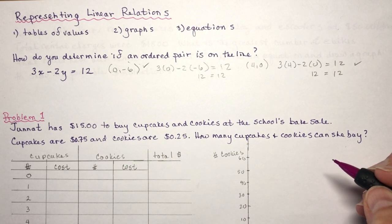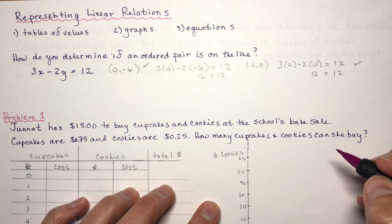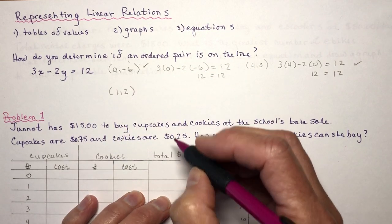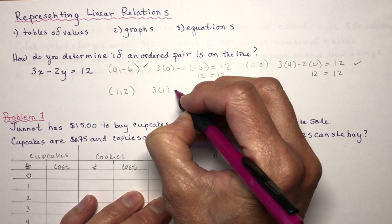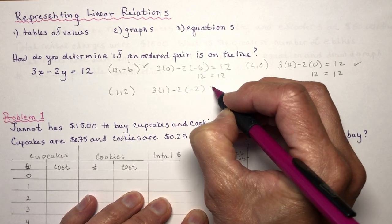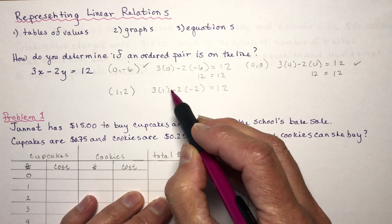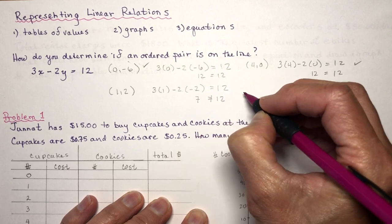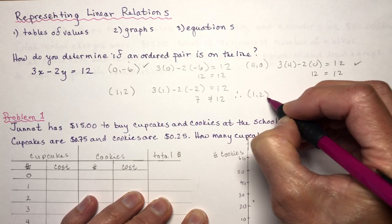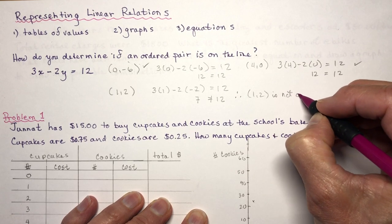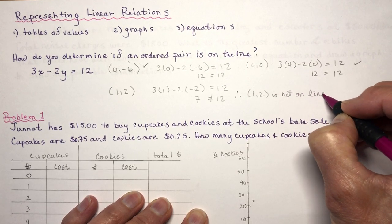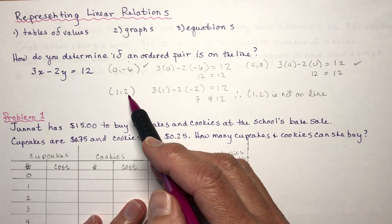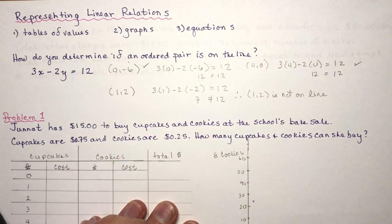So I'm sure you can think of many points that are not on the line. Let's try the point (1, 2). Is (1, 2) on the line? I would say 3 times 1 minus 2 times -2 equals 12. That gives me 3 plus 4. 7 is not equal to 12, so therefore (1, 2) is not on the line. So often you're asked to prove whether or not some coordinates are on a line. Does it satisfy the equation?